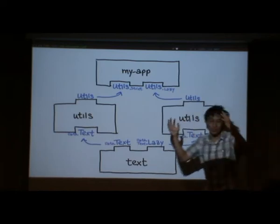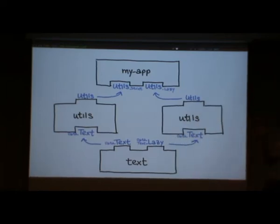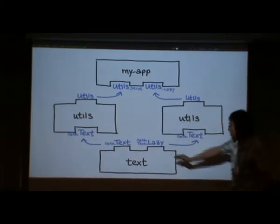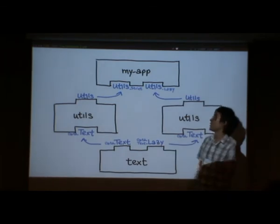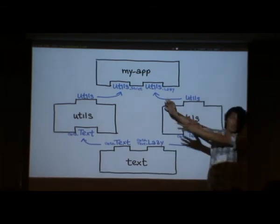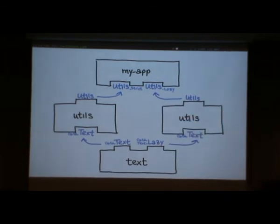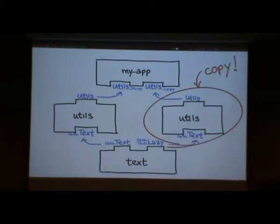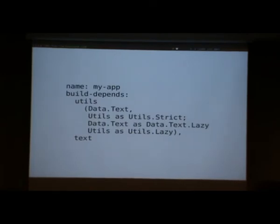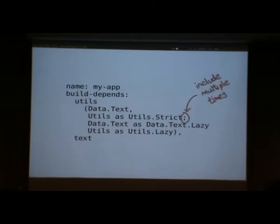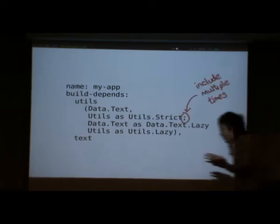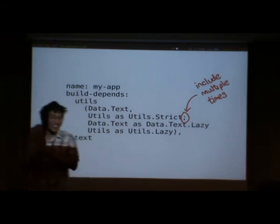The point of reusable software components is that I want to instantiate them multiple times, possibly with different implementations, and then maybe use them together in one application. To do this, I need to introduce one extra new feature: the semicolon syntax. What does the semicolon say? It says I need to depend on this package and I want to depend on it multiple times.